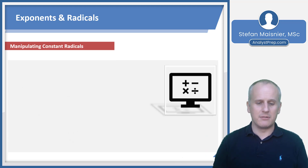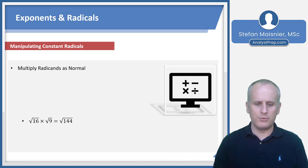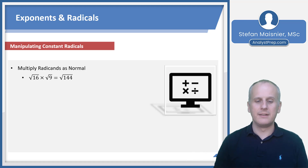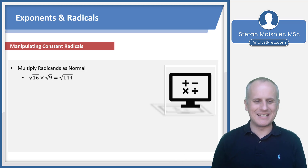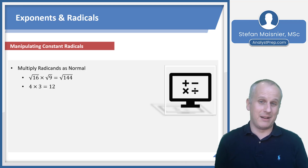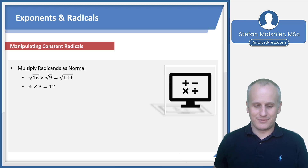With radicals, you can do the same kinds of manipulations. You can multiply radicands as normal as long as you have the same root type. So the square root of 16 times the square root of 9 equals the square root of 144. Since 16 times 9 equals 144, and the square root of 144 is 12, this confirms that taking the square roots first — square root of 16 is 4, square root of 9 is 3, and 4 times 3 is 12 — gives the same result.